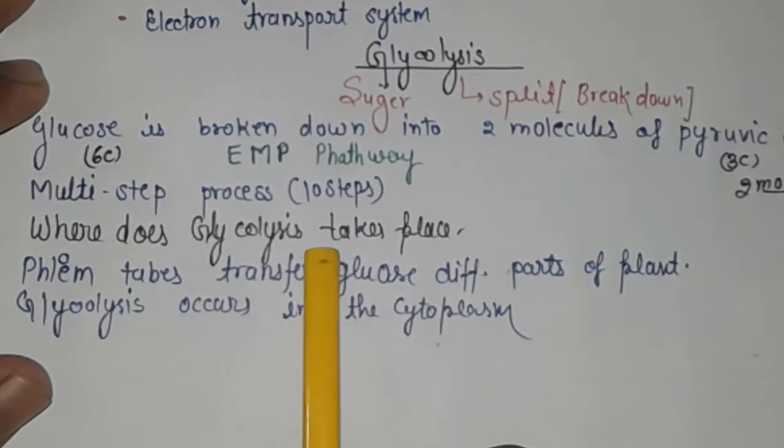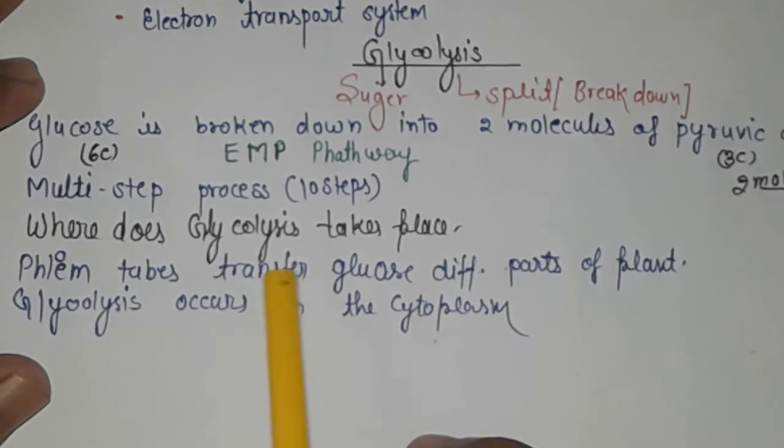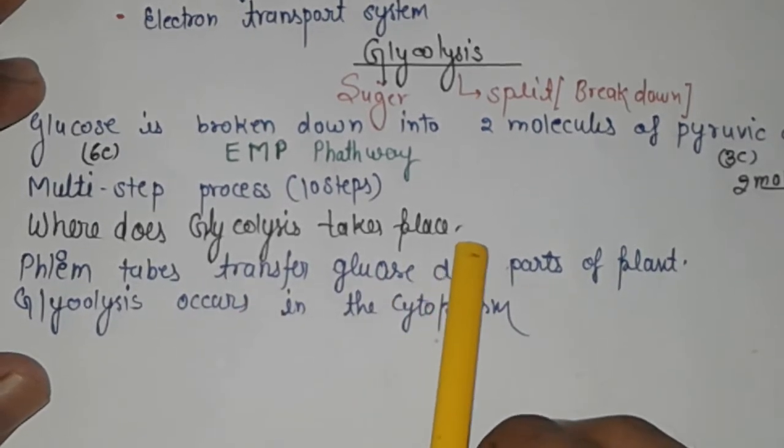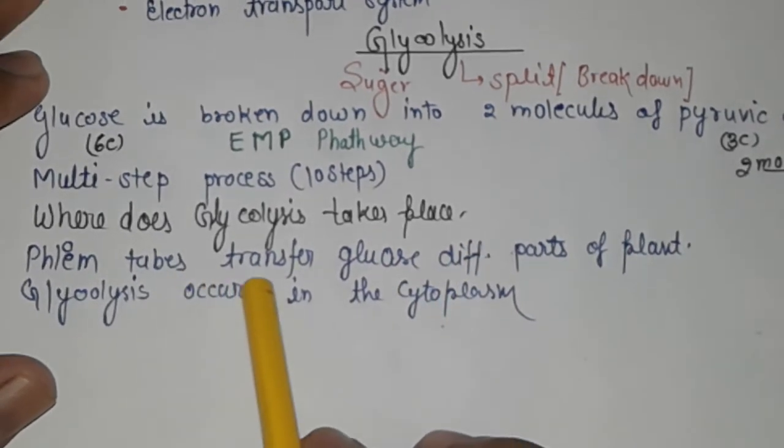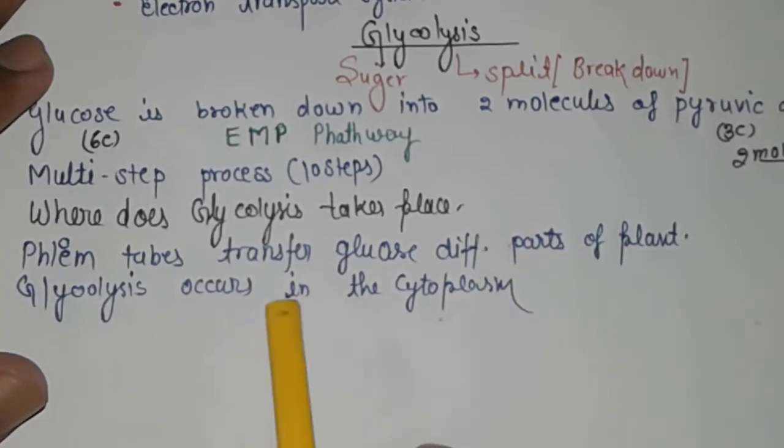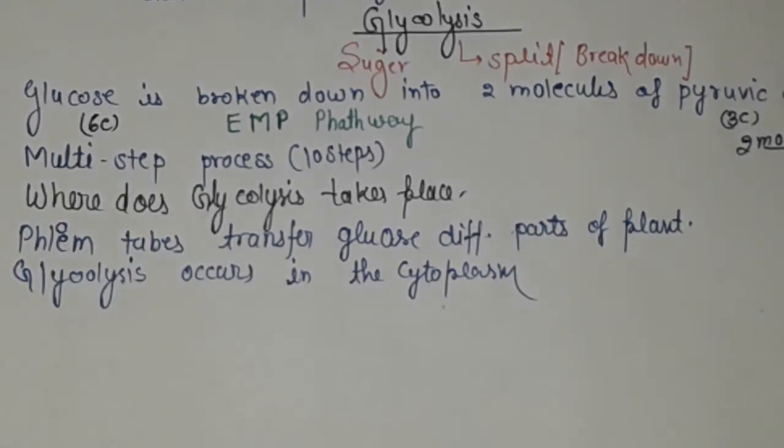Where does glycolysis take place? Glycolysis takes place in the cytoplasm. Phloem tubes transfer glycolysis to different parts of the plant. Glycolysis occurs in the cytoplasm.